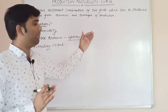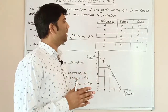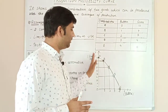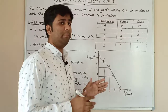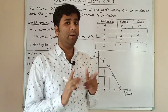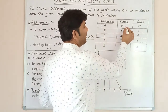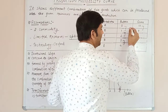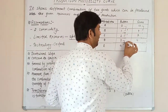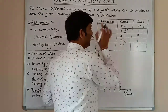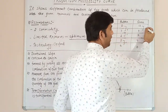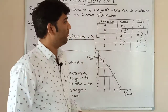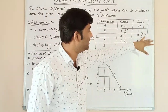Let's see how PPC is made. Let's talk about the PPC schedule. When we get into the PPC schedule, we will make a production possibility. The sacrificing ratio here always keeps increasing, while the gaining ratio remains 1-1 throughout.